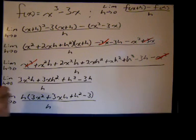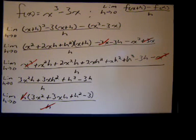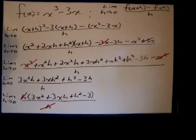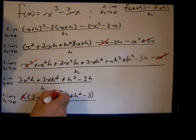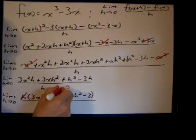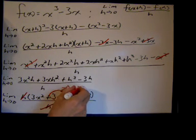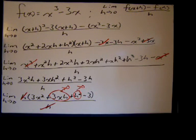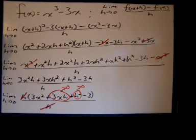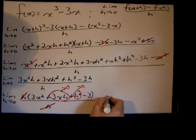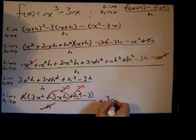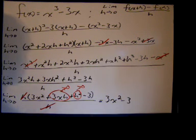We can make a simplification, canceling the h's. Now we can take the limit. As h goes to 0, the 3xh term goes to 0, as well as h² goes to 0. So we're left with 3x² minus 3.